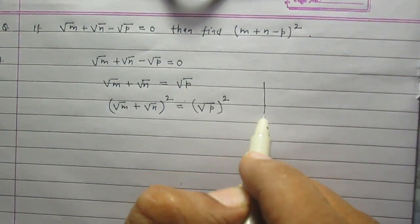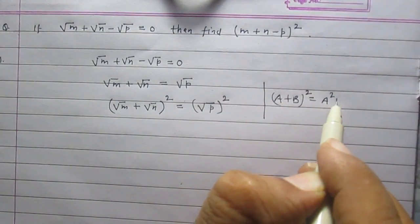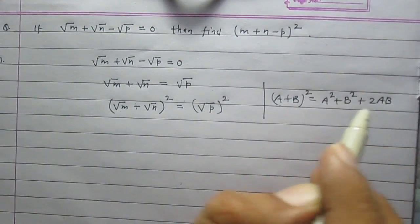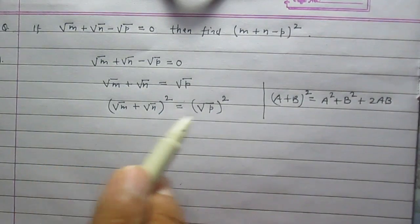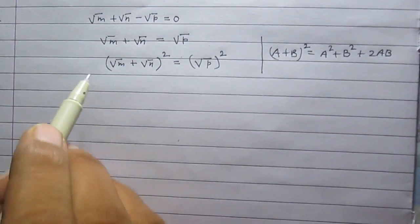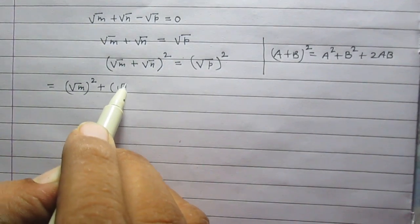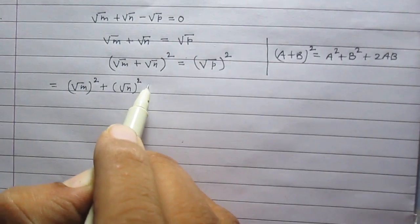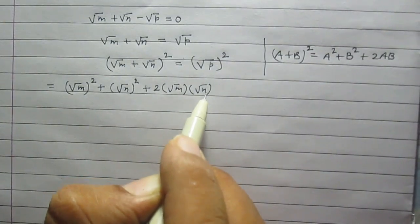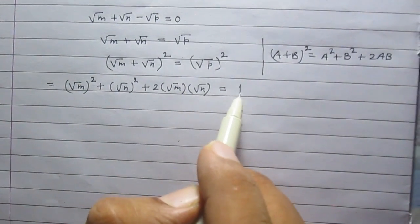Now using the identity a plus b whole square is equal to a square plus b square plus twice of ab, where a stands for square root of m and b stands for square root of n, we can expand the left hand side as a square plus b square plus twice of a multiplied by b, and the right hand side as square of square root of p, which is p itself.